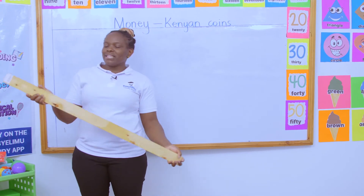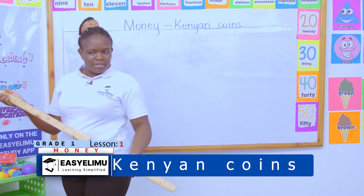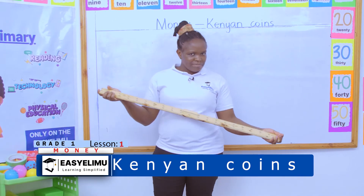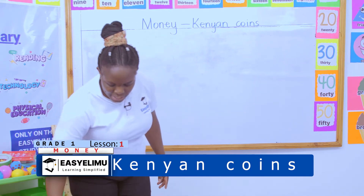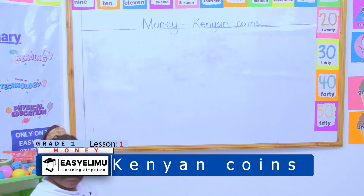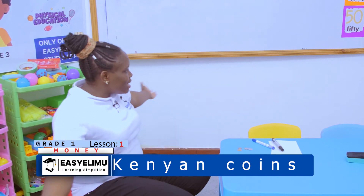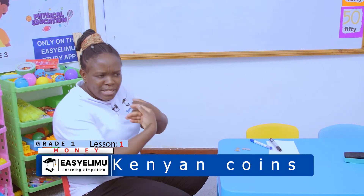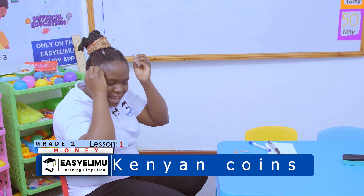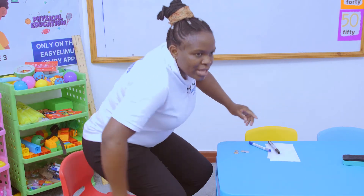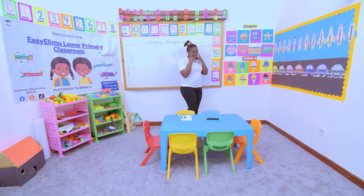But when you talk about money given in exchange of something, is it only something you can see? No. Because sometimes I go and sit down in a salon and I tell the person of the salon, please make my hair. At the end of the day, I give that person money. She has only done my hair. So, something you give in exchange is something that you can see or something that you cannot see.